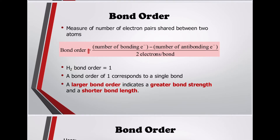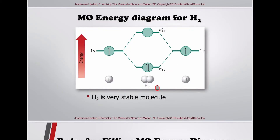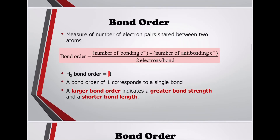Bond order is a measure of the number of electron pairs shared between 2 atoms. The formula: bond order equals the number of bonding electrons minus the number of anti-bonding electrons, divided by 2. For H₂: bond order = (2 − 0) / 2 = 1.